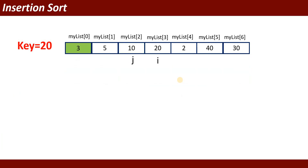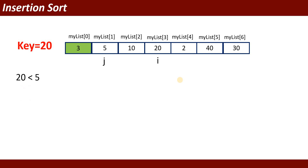Next, i increments to point to value 20, and j points to value 10. We check: is the value of key less than the value of j? Key is 20, so is 20 less than 10? No. In that case, we move to the right side, advancing i to index number 4.